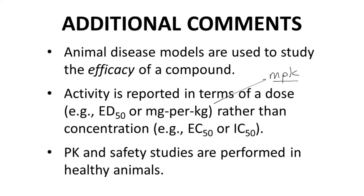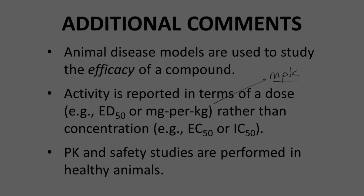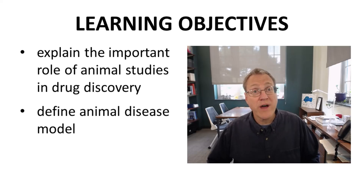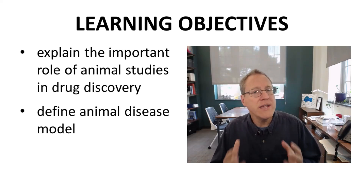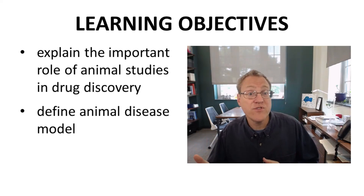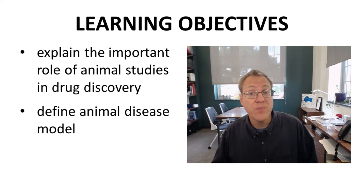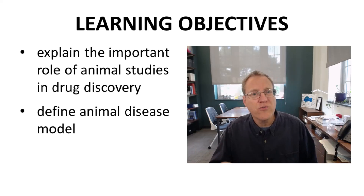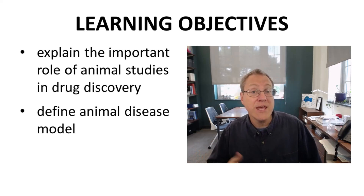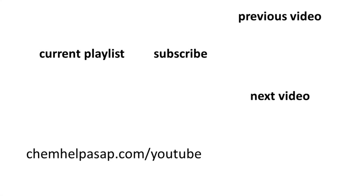In contrast to animal efficacy studies, animal safety and PK studies typically involve healthy, non-diseased animals. We have now provided reasons why animal studies are needed to advance and understand the treatment of diseases in humans. We have also defined an animal disease model, which is critical for predicting how effective a drug will be in humans.